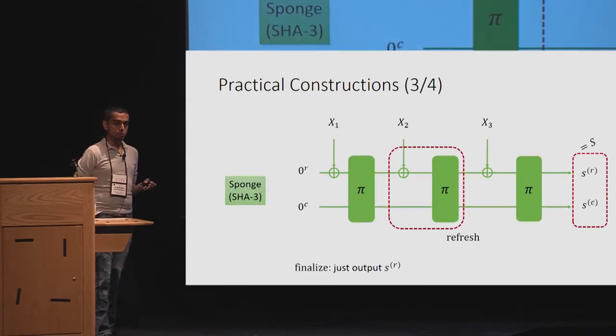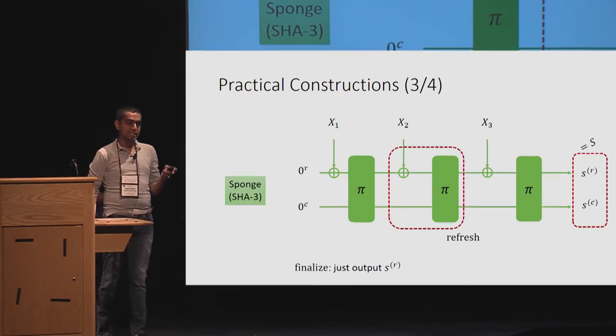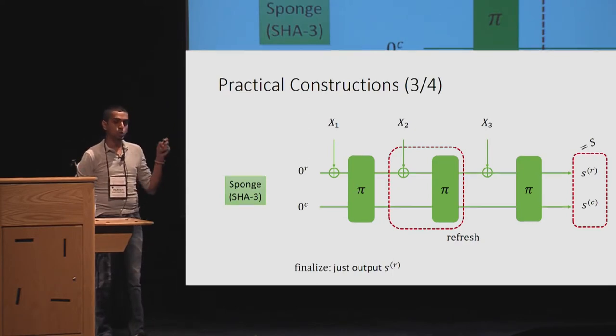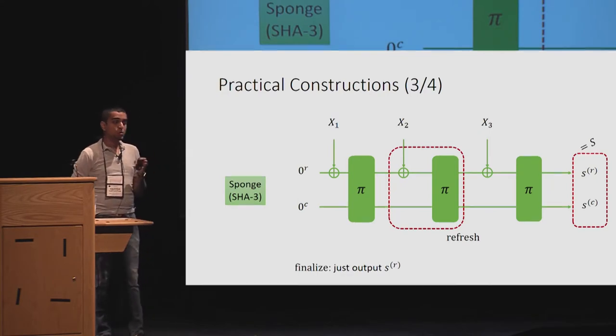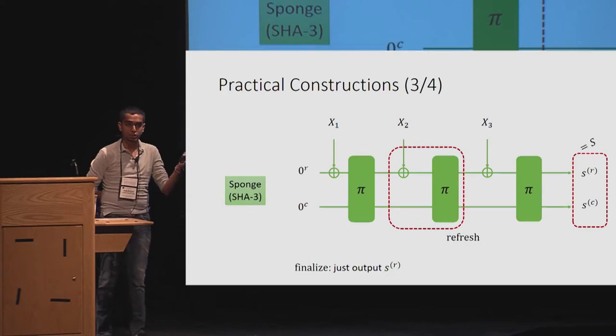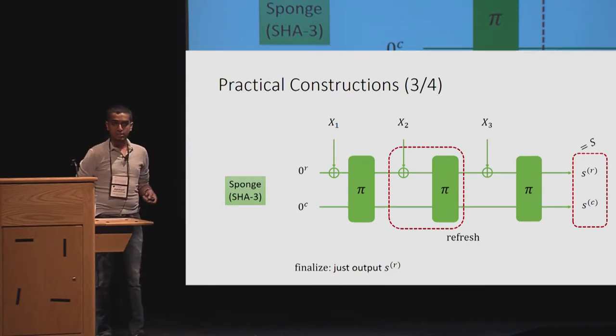Then we come to sponge, where it's a different breed. The refresh function basically exhausts the input to only the first half of the state, or first part of the state. And then finalized just outputs the first R bits of the state. The reason is simple, because if it outputs the entire state, because we are using a random permutation pi, I can invert the query. So this is the third construction.